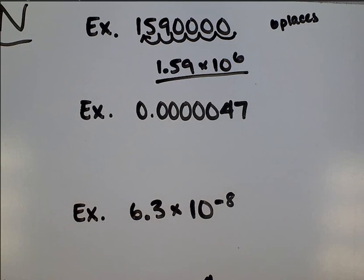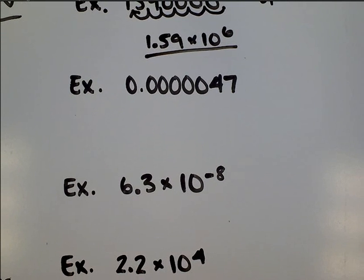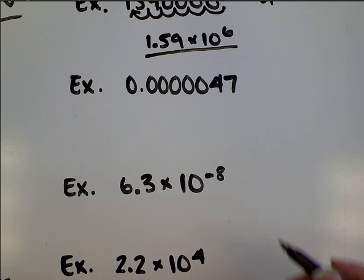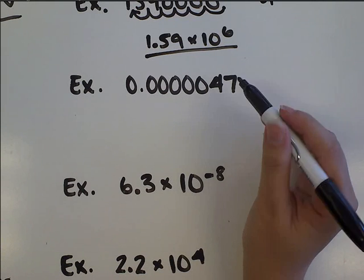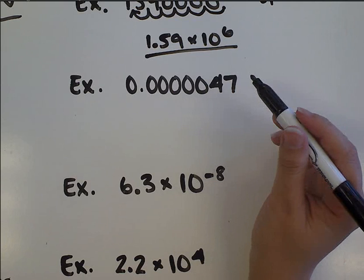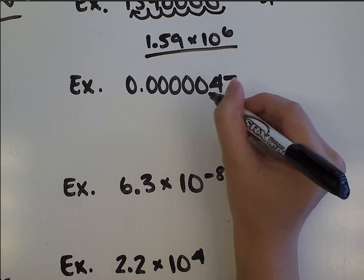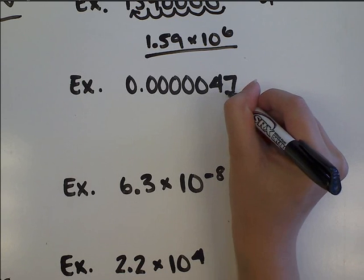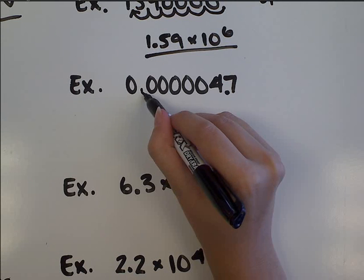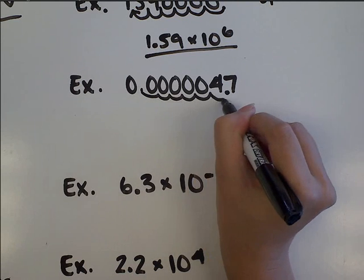Now here is another example. We've got an itty bitty decimal. We want to put it into scientific notation. So we want to move the decimal point until there is just one non-zero digit to the left of the decimal point, so that we're between 1 and 9.999. So that means we need the decimal point to be right here. So we've got 4.7. Now we're going to move the decimal point 1, 2, 3, 4, 5, oh look, 6 places again.